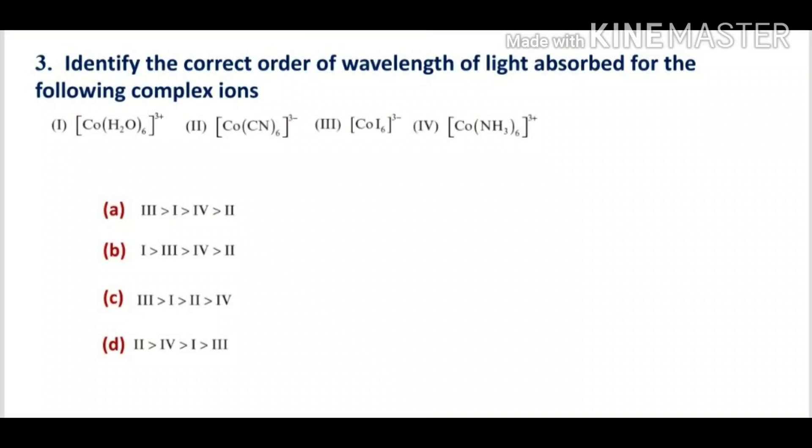Question number 3: Identify the correct order of wavelength of light absorbed for the following complex ions — hexaaqua cobalt(III) ion, hexacyano cobalt(III) ion, hexaiodo cobalt(III) ion, and hexaammine cobalt(III) ion. Among these four complexes, the third complex is hexaiodo cobalt(III) ion.